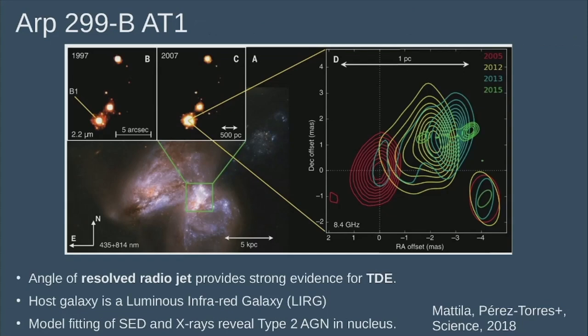The smoking gun used to identify this as a TDE is the radio data. We see a compact radio source in 2005 in the nucleus, and when you come back the emission has moved off and declines. This is interpreted as a mildly relativistic jet angled towards the observer that decelerates quite fast. There's also a type 2 AGN in this nucleus, found from hard X-rays and SED fitting - and that's the wrong inclination for a jet associated with that accretion disk.